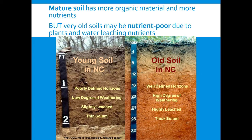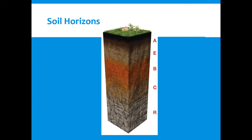Here are two examples: a young soil and an old soil, both from North Carolina. In the young soil it's hard to distinguish the horizons, whereas in the older soil you can clearly see the organic layer, the eluviated layer, and the B and C horizons. Older soils typically show more defined horizons.